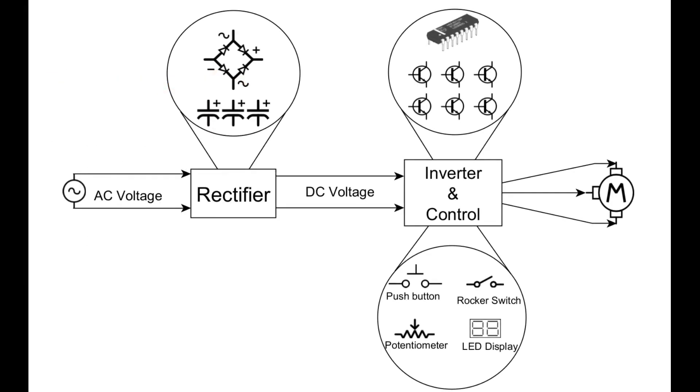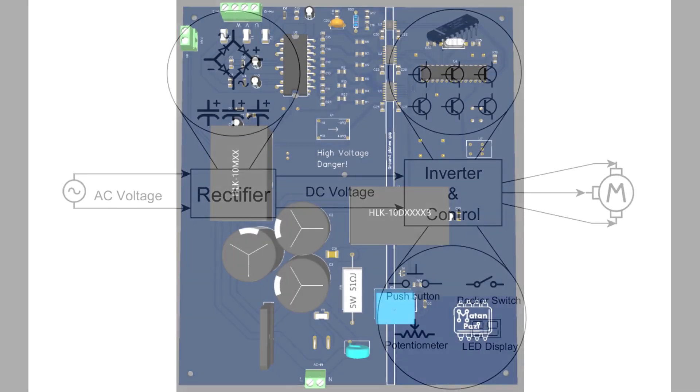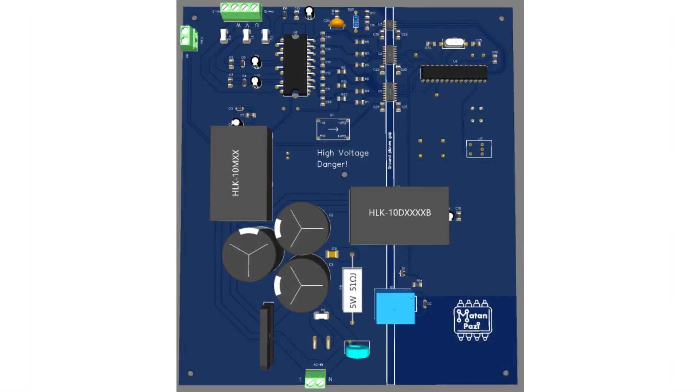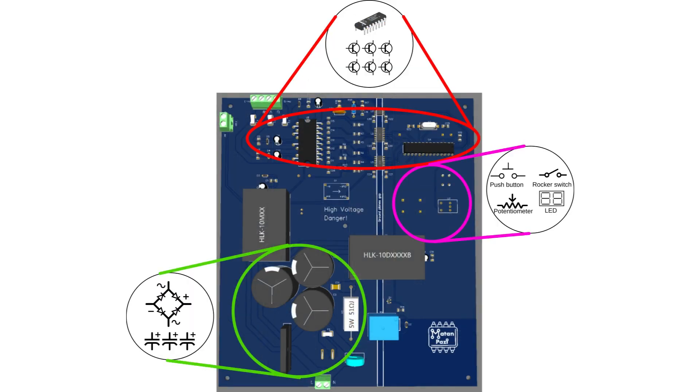As a reminder, here's the block diagram of the system. Here's a top view of the PCB. And here are the correlating components of the block diagram on the PCB itself. Alright, let's get started.